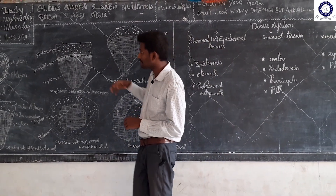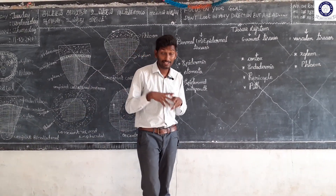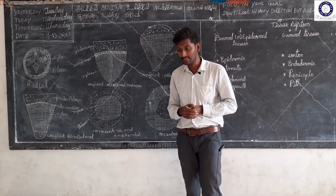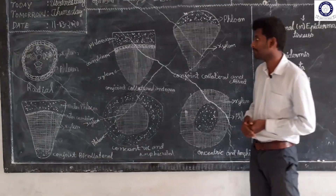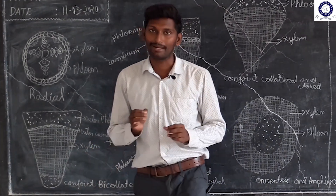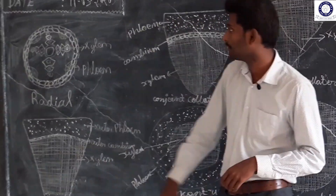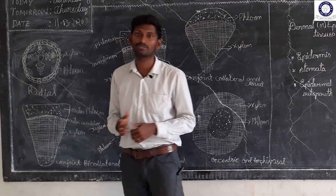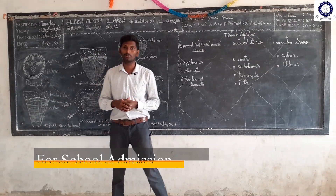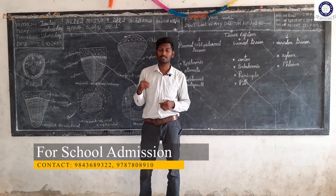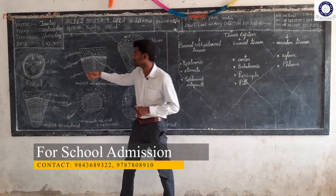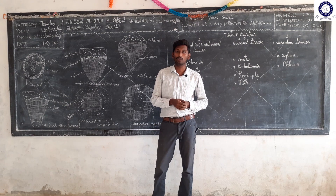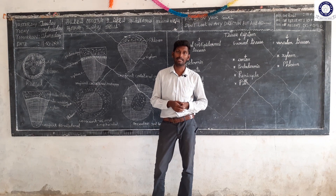Regarding the arrangement of vascular bundles — there is also proto-xylem and meta-xylem. In the structure, meta-xylem is towards the outer layer and proto-xylem is towards the inner or end condition, which can be seen in the outer layer.